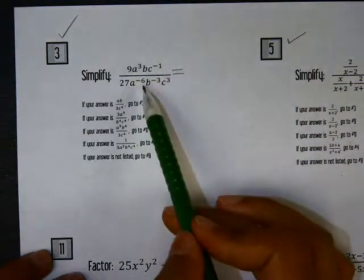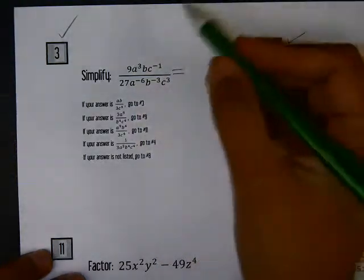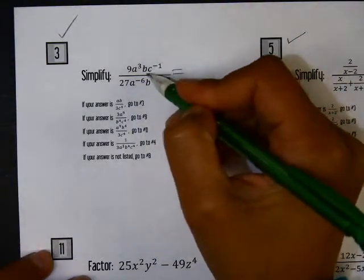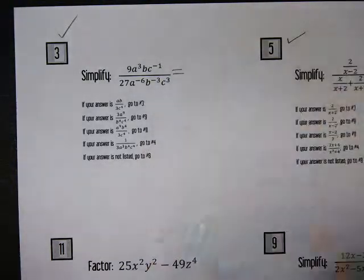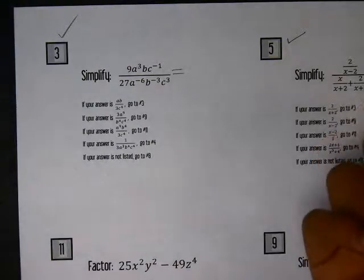We need to remember our property for negative exponents, which is that any of these factors that have a negative exponent are going to move to the other side of the fraction, and then the exponent will become positive.